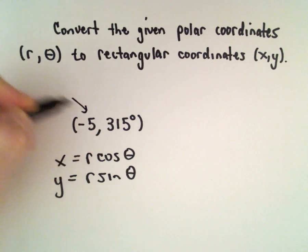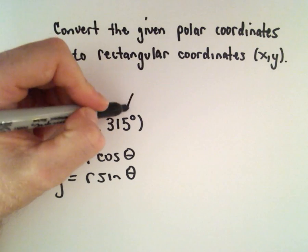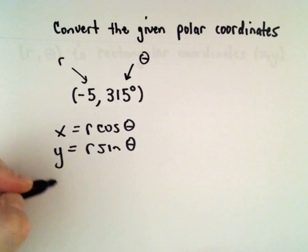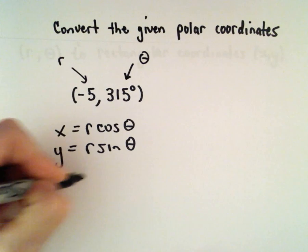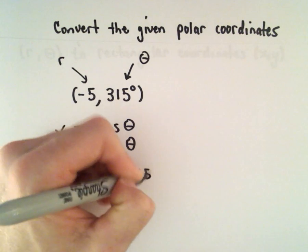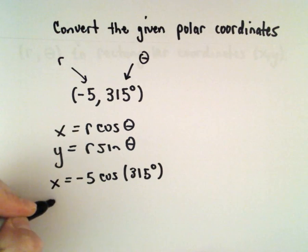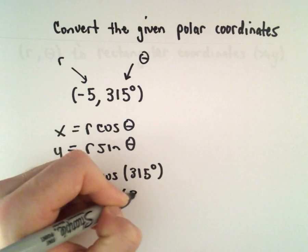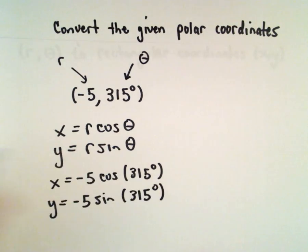So again, in this case our r value will be negative 5. Our theta value will be 315 degrees. So that will give us x equals negative 5 times cosine of 315 degrees and y will be negative 5 times sine of 315 degrees.